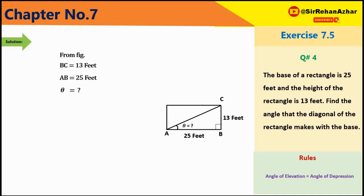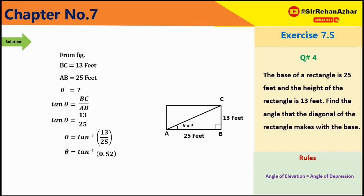Right angle triangle ABC में theta के respect BC है perpendicular और AB है base। Tangent of theta = BC/AB = 13/25। Theta = tan inverse (0.52)। Tangent inverse की value find करते हैं 0.52 पर तो theta = 27.47 degree। Diagonal base के साथ 27.47 degree का angle बना रहा है।